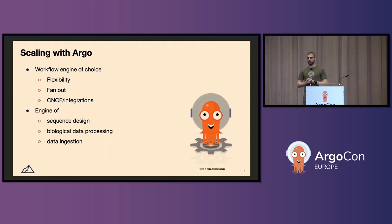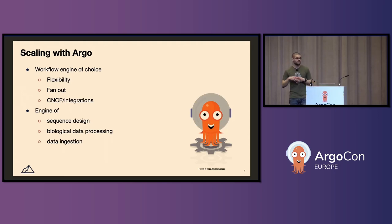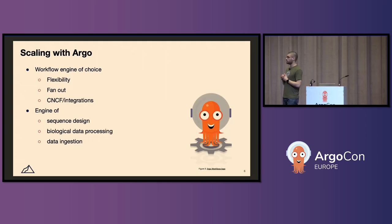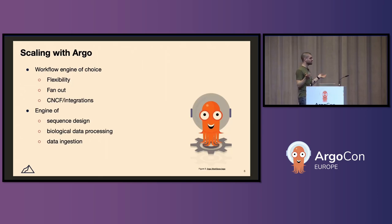At Dyno, Argo workflows was the workflow engine of choice for three reasons. We get immense flexibility from Argo workflows, and we focused on flexibility because we noticed an increased uptake in tools such as Docker containers in the scientific community, which allows us to take one such container and run it in our Argo workflows to solve a problem that Dyno has. You'll also see a lot of fan out and fan in — to my knowledge, Argo workflows is one of the few workflow engines that's actually very good at helping you orchestrate that capacity. And lastly, the ability to integrate with other CNCF products. When you adopt Kubernetes and Argo workflows, you're opening up the opportunity to integrate with all of the constellation of products in the CNCF ecosystem, which is really empowering for organizations.